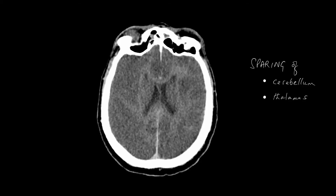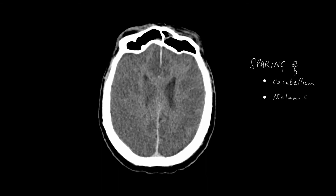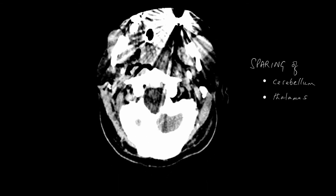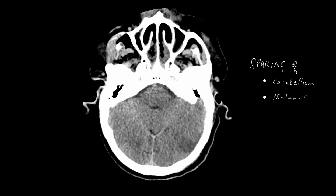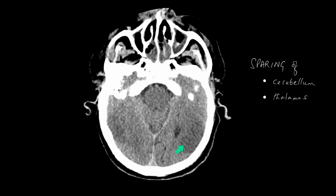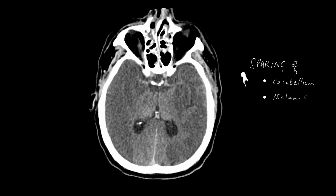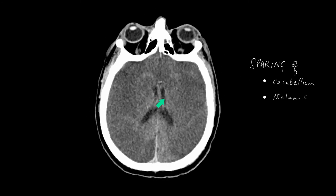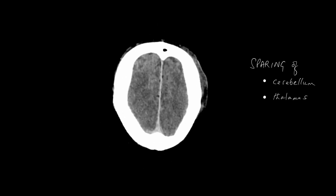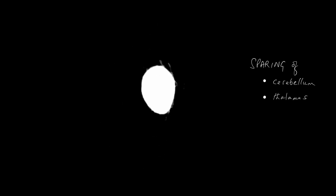Here is another patient who has got global hypoxia. You can see that the cerebellum is of normal density pretty much. There is an area of reduced density here, and if you look at the thalami they tend to be of normal density. So this is global anoxia giving sparing of the cerebellum and thalamus, but also demonstrating the pseudo-subarachnoid sign.